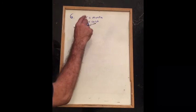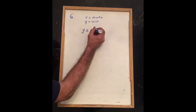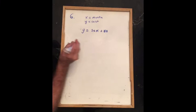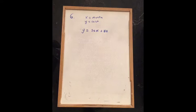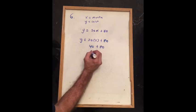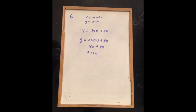For problem 6, we let x equal the months and y equal the cost. The cost y equals 20 times x plus 80, since it's $20 per month plus a one-time enrollment cost of $80. To solve for 2 months, put in 2 for x: y equals 20 times 2 plus 80, which is 40 plus 80, or $120 for a 2-month membership.